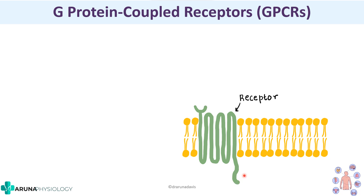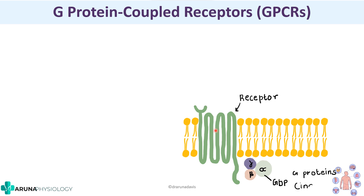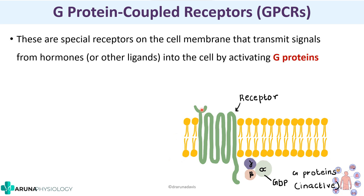Why is it called G-protein coupled? Because they are coupled with G-proteins. G-proteins are basically proteins that are involved with GDP or GTP - that is why they are called G-proteins. This receptor is usually coupled with G-proteins, and they are special receptors on the cell membrane that transmit signals from hormones into the cell by activating G-proteins.